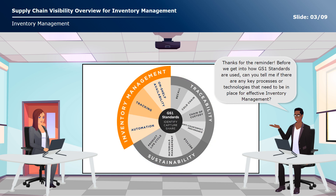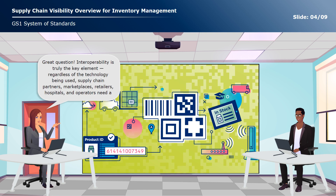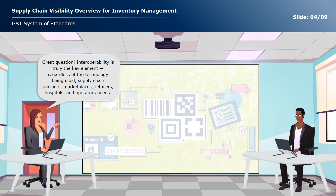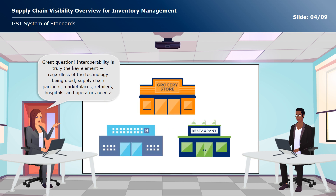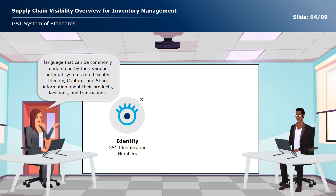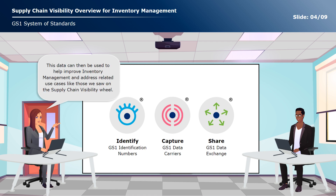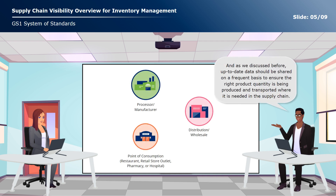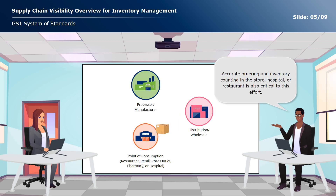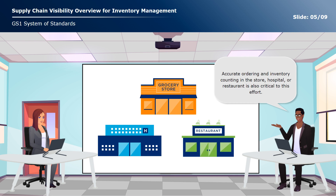The primary goal is ensuring there are enough goods or materials to meet demand without creating overstock or excess inventory. Great question. Interoperability is truly the key element. Regardless of the technology being used, supply chain partners, marketplaces, retailers, hospitals, and operators need a language that can be commonly understood by their various internal systems to efficiently identify, capture, and share information about their products, locations, and transactions. Up-to-date data should be shared on a frequent basis to ensure the right product quantity is being produced and transported where it is needed. Accurate ordering and inventory counting in the store, hospital, or restaurant is also critical to this effort.